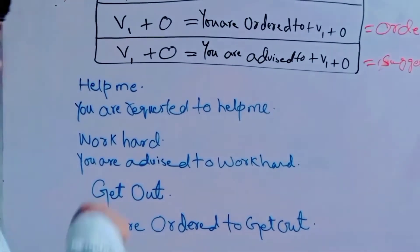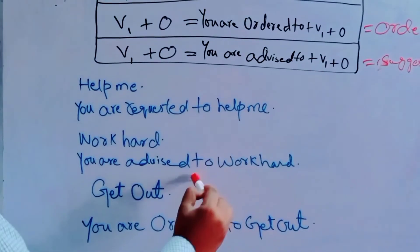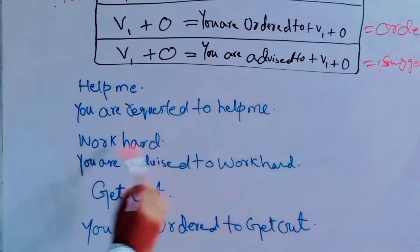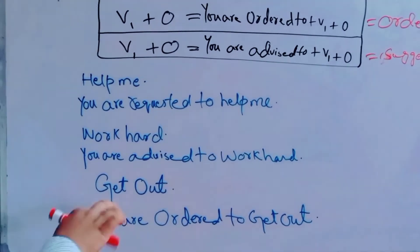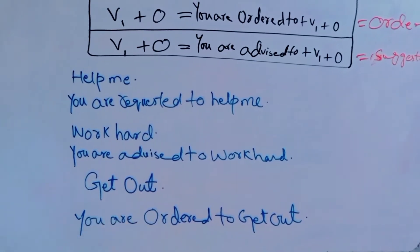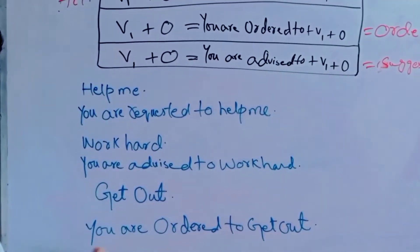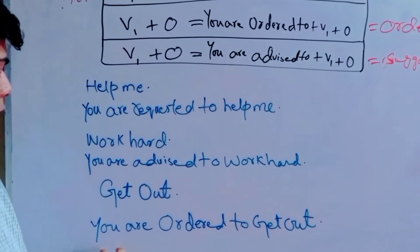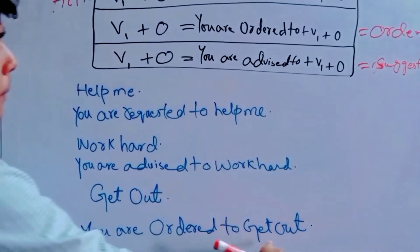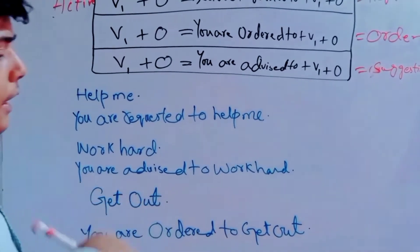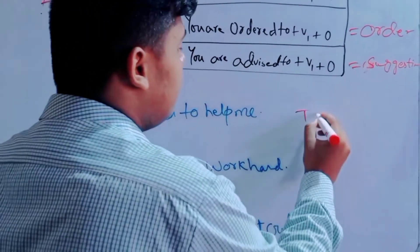If you are giving a suggestion to someone, use 'You are advised to', followed by the verb's first form plus object — same pattern. Similarly, 'Get out' is an order, so the passive becomes 'You are ordered to get out', and again the verb's first form plus object follows.